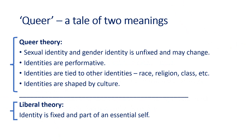Looking at queer under two different approaches — queer theory and liberal theory. Queer theory proposes that sexual identity and gender identity is unfixed and may change over time; that identities are performative, about how we express our identity and the way we behave; that identities are tied to other identities such as race, religion, social class; and that identities are shaped by culture. In queer theory, the term queer is defined against what is considered normal or normative — we are questioning what normal is. Liberal theory, on the other hand, sees identity as fixed or unchanging and as part of an essential self.